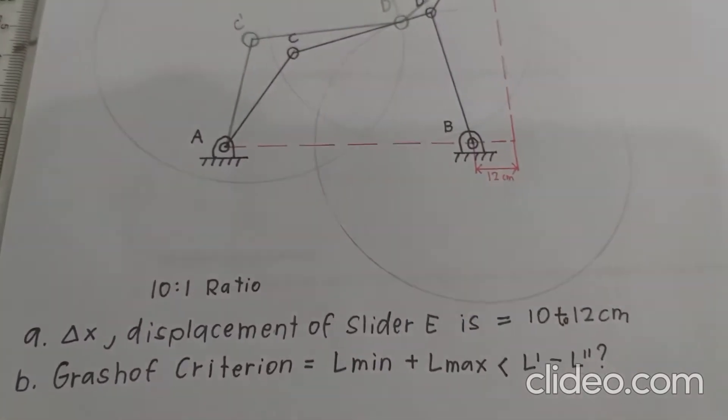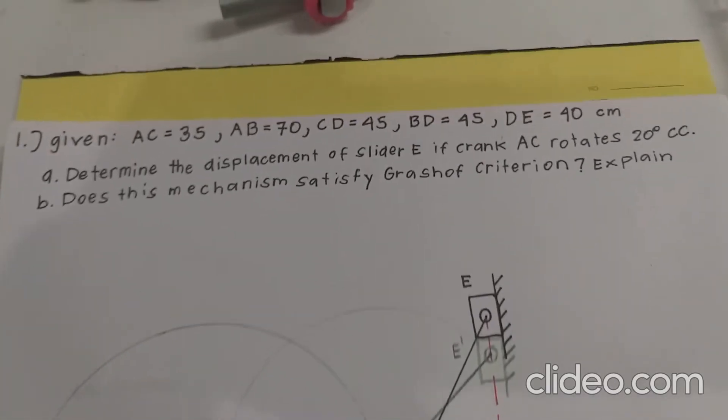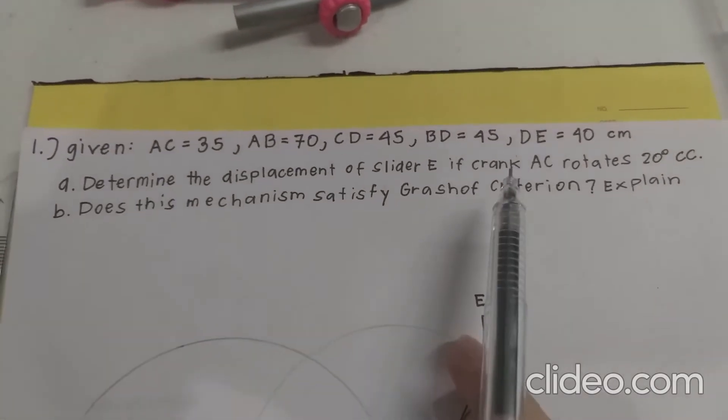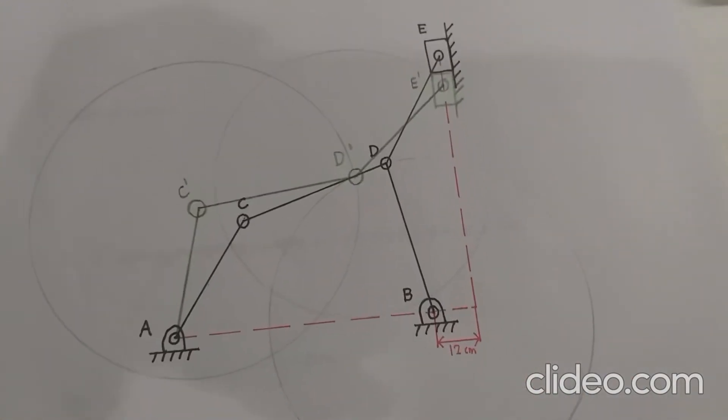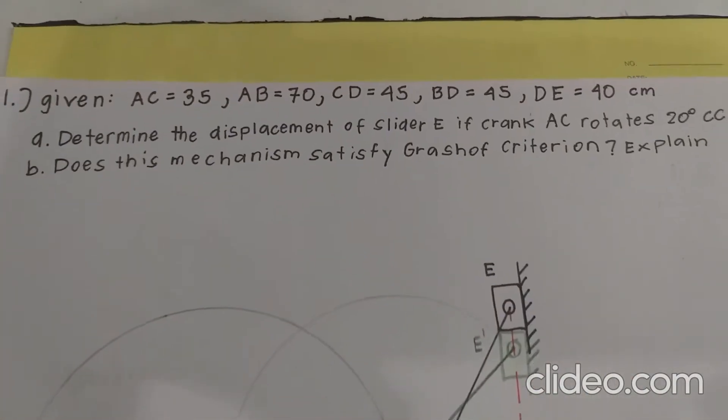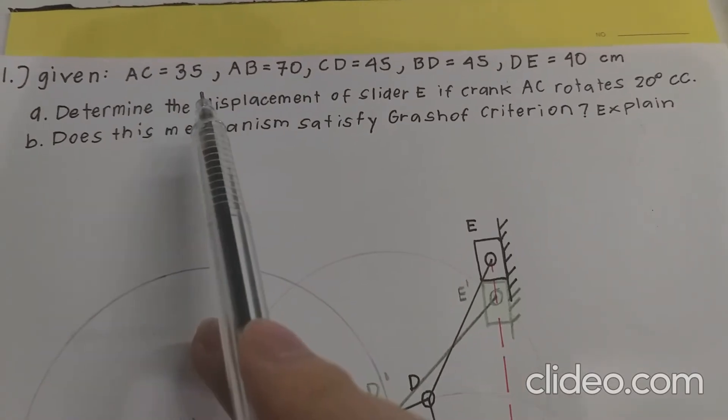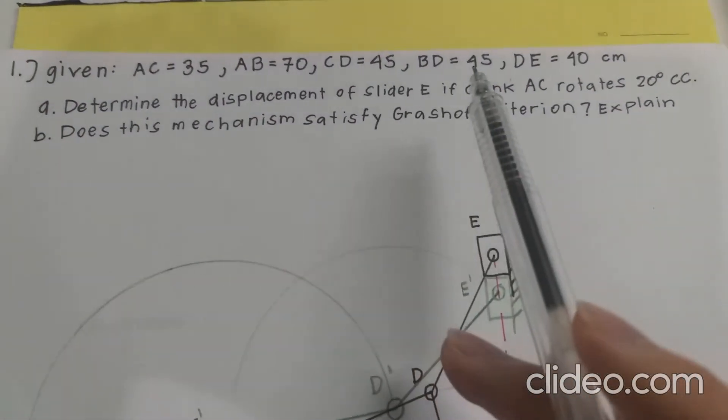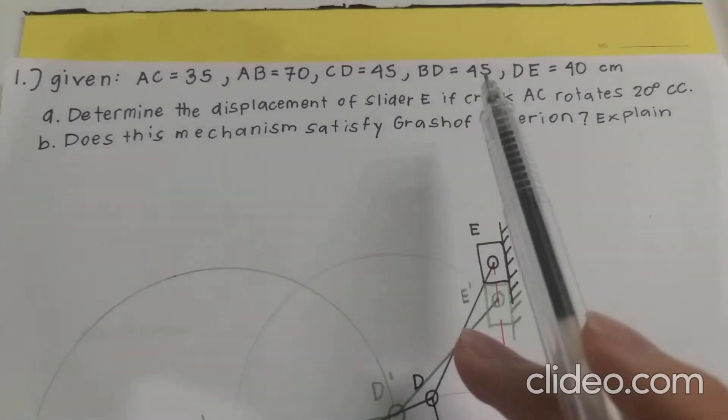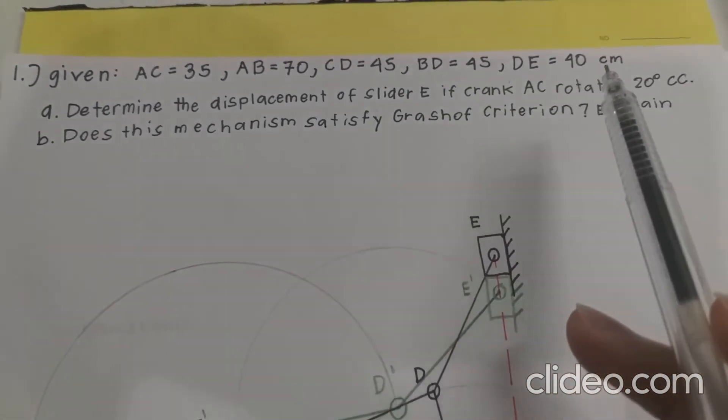So basically what we have to do, we have four measurements here, not counting the AB because there's no link between AB. So we have AC, which is 35, CD, which is 45, BD, which is 45 also, and DE, which is 40 centimeters.